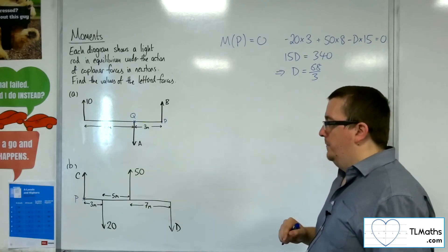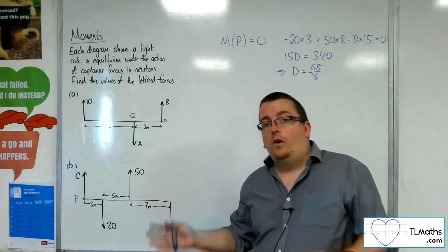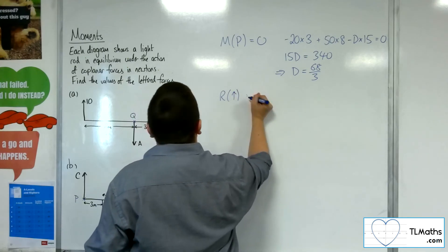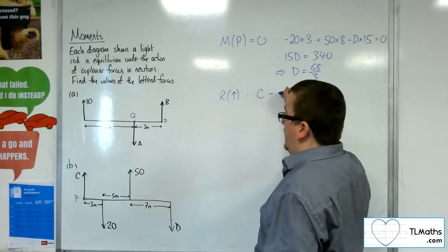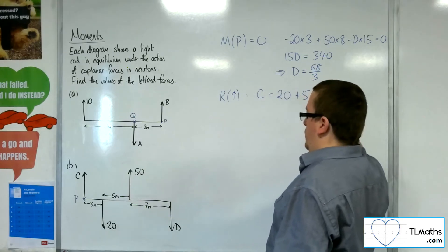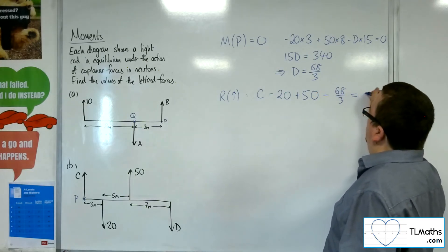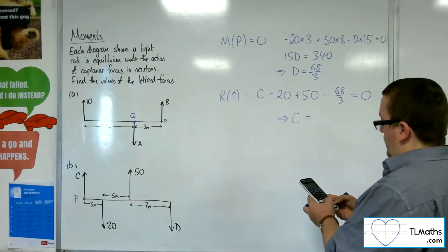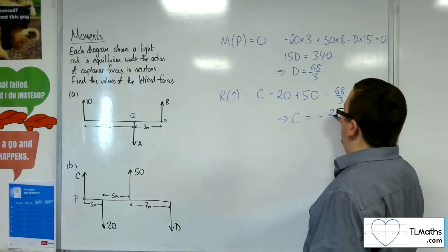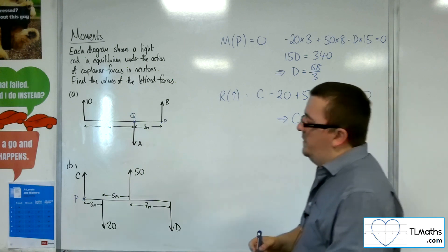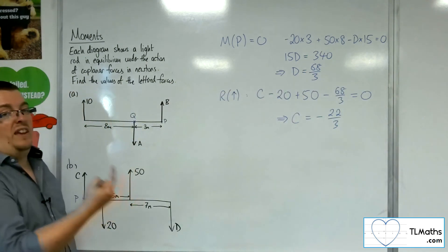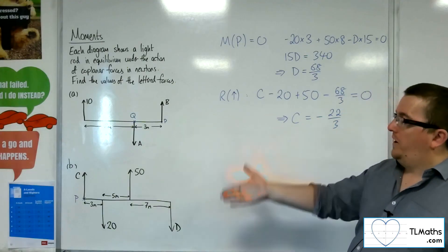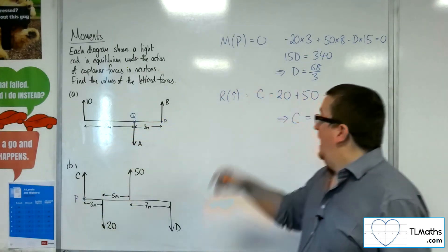Now I need to find C. I can use the fact that the resultant force is zero. Resolving vertically, taking upwards as positive: C minus 20 plus 50 minus 68 over 3 equals zero. This gives C equals 68 over 3 minus 50 plus 20, which is minus 22 over 3. The negative sign means C is actually pointing the other way — so C must be pointing in the opposite direction at 22 over 3 newtons for the rod to be in equilibrium.